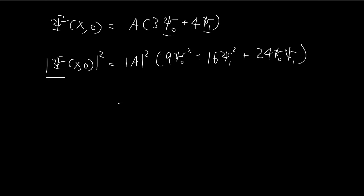We know that this is going to be normalized, and we also know that all these individual xi 0 and xi 1 functions are also normalized when you square them. So one thing we can do to find this constant A is to integrate both sides. When we integrate both sides, on the left-hand side, because this is normalized, this is going to be equal to 1. On the right-hand side, the constant just remains, and then we will be integrating these functions.